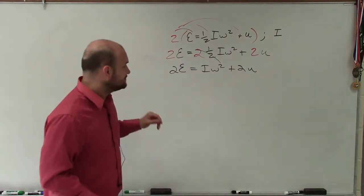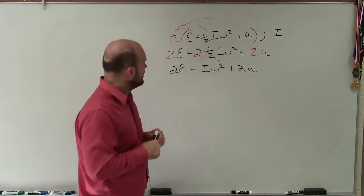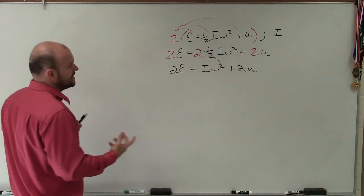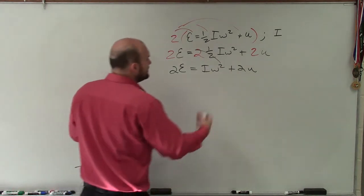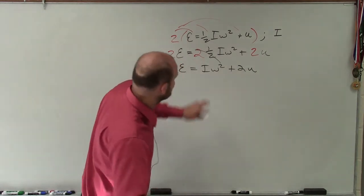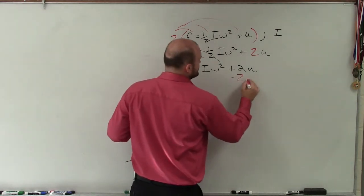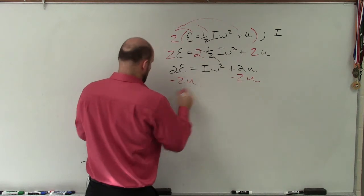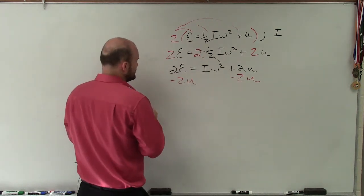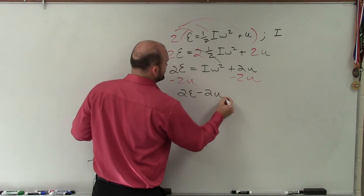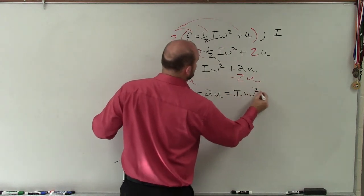Now the next thing we're going to do is work with 2E = Iω² + 2u. Let's look at it and say, I need to undo the addition that's happening to my variable i. To do that, I'll subtract 2u from both sides. Therefore, I have 2E - 2u = Iω².